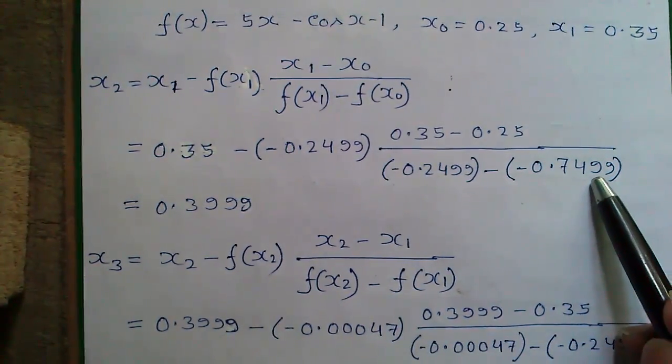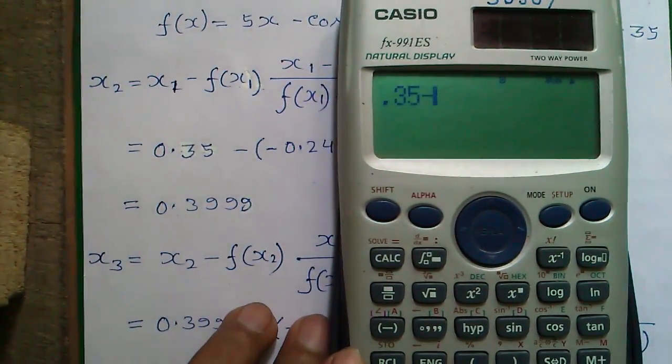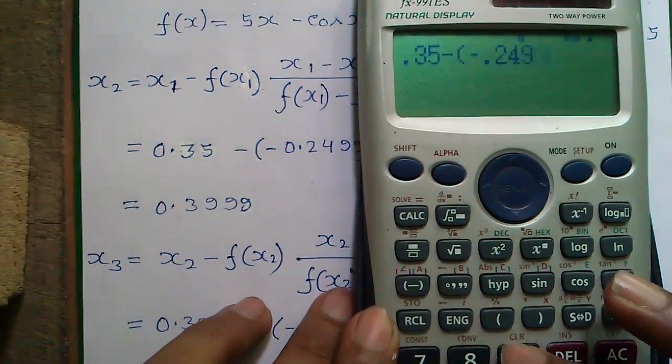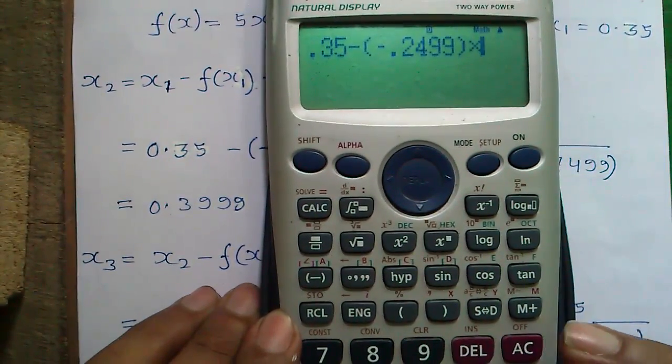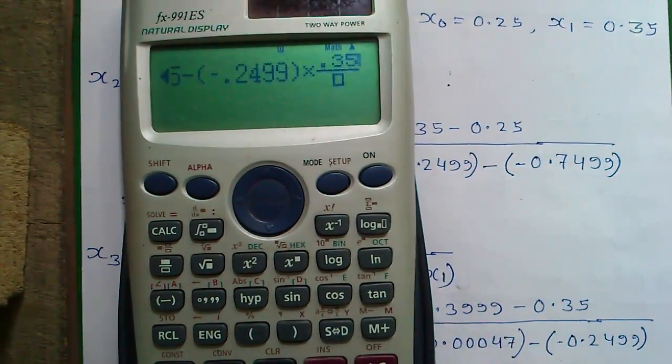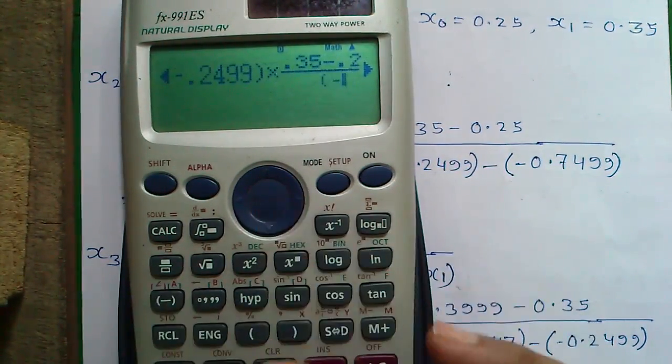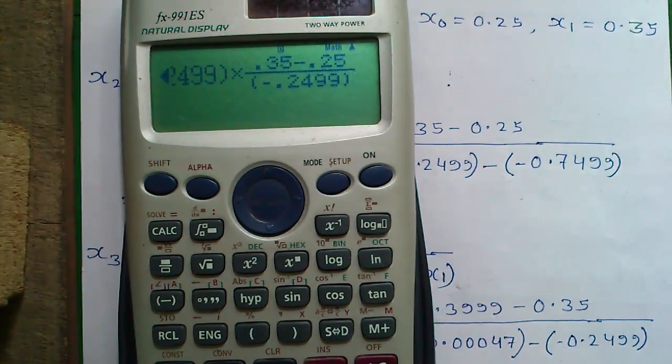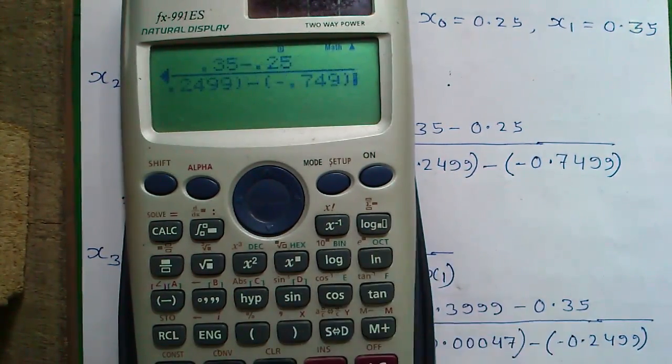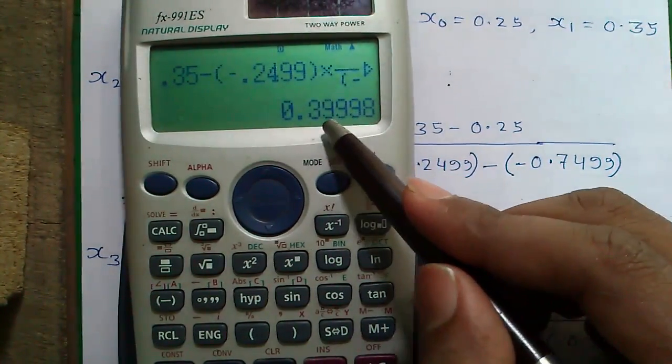How to do this calculation on this calculator? I will tell you. Enter the expression minus 0.2499 into, press this button for fraction, 0.35 minus 0.25 divided by minus 0.2499 minus 0.7499. And press equals to. So that will give you 0.3999.